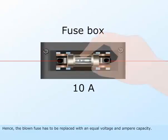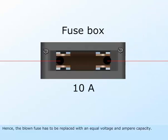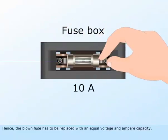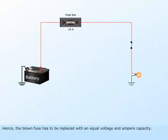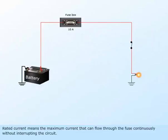Hence, the blown fuse has to be replaced with an equal voltage and ampere capacity. Rated current means the maximum current that can flow through the fuse continuously without interrupting the circuit.